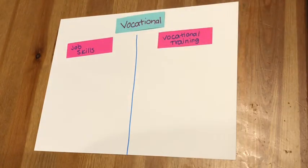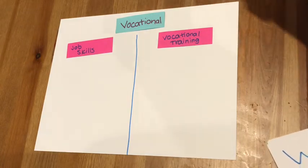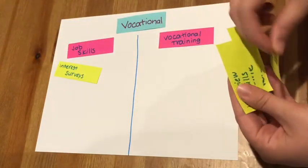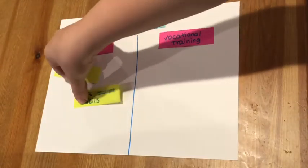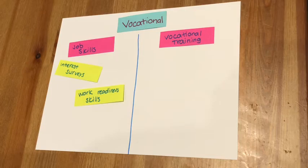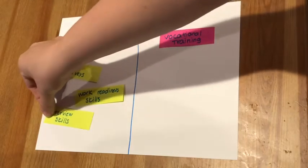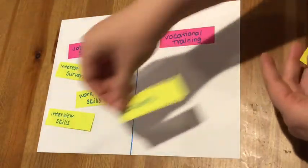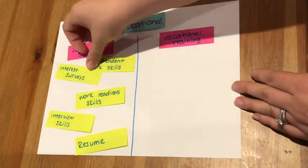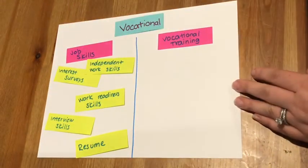Within job skills we'll work on taking interest surveys to determine what different jobs we would like to do in the future, work readiness skills such as getting ready for work, listening to what your boss has to say, following directions at work, interview skills, developing a resume, and independent work skills.